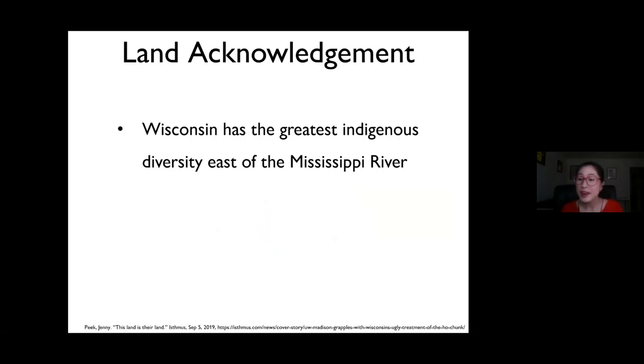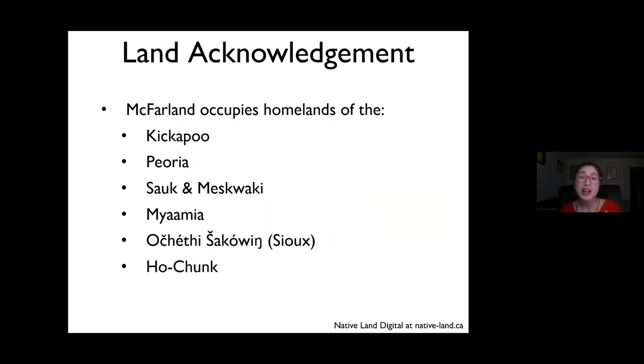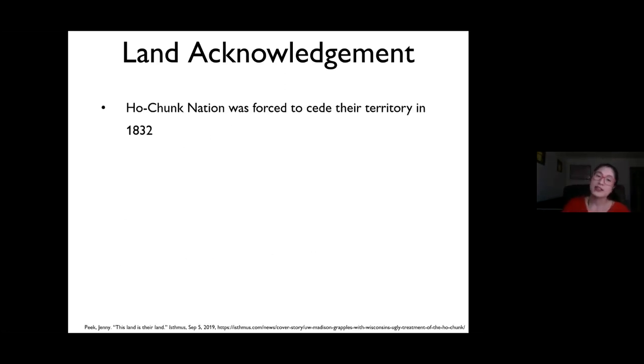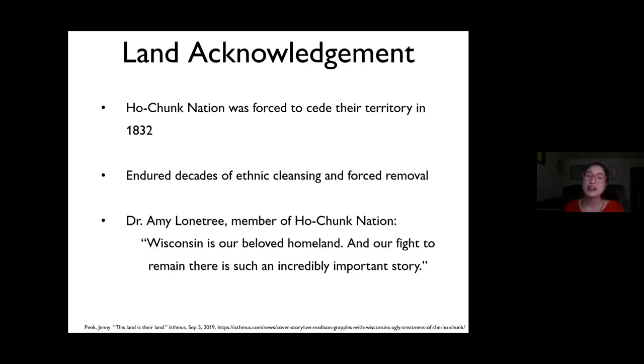So Wisconsin is home to the greatest Indigenous diversity east of the Mississippi River. Within the borders of the state are 12 American Indian nations, 11 of which are federally recognized. And more specifically, McFarland, Wisconsin occupies the homelands of the Kickapoo, Peoria, Sauk and Meskwaki, Miami, Ochedi-Shakon or Sioux, and the Ho-Chunk nations. I'm going to talk a little bit more about the history of the Ho-Chunk nation. Because the nation was forced to cede their territory in 1832, and they endured decades of ethnic cleansing and forced removal by both state and federal governments. These attempts were unsuccessful. And as said by Dr. Amy Lone Tree, who was a member of the Ho-Chunk nation, Wisconsin is their beloved homeland, and their fight to remain there is such an incredibly important story.